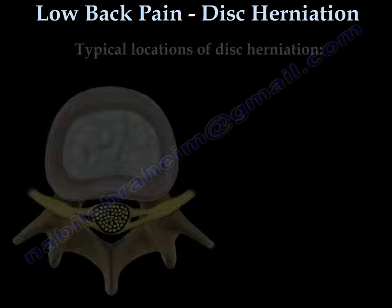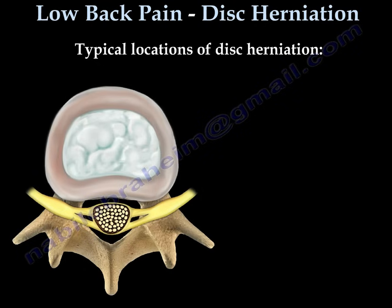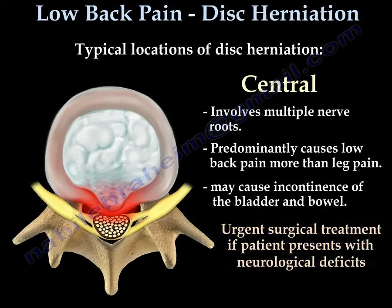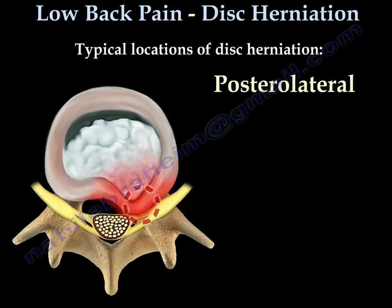There are three typical locations for disc herniations. The first location is central — it is a rare condition. It will affect multiple nerve roots, the patient will have back pain more than leg pain, and it may cause incontinence of bladder and bowel. Urgent treatment is necessary if the patient presents with neurological deficit.